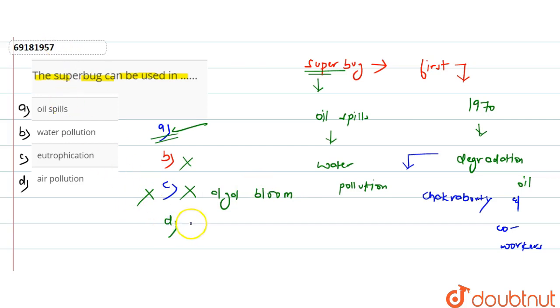And last option says it can be used in air pollution, which is again incorrect. So, the correct answer is that it can be used in oil spills.